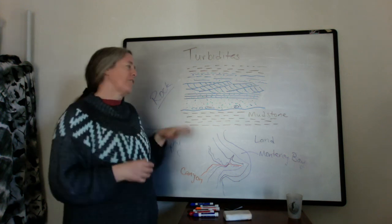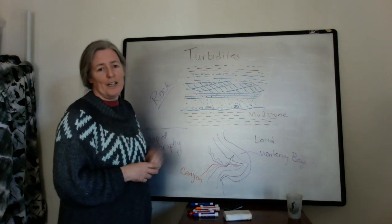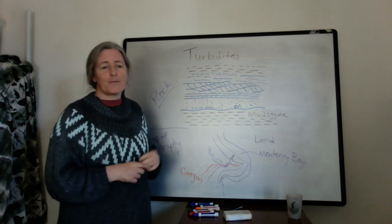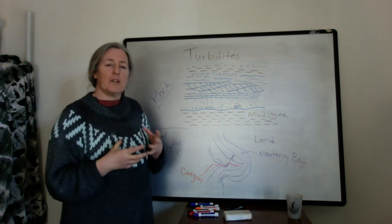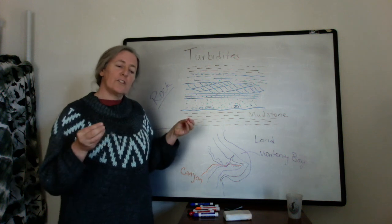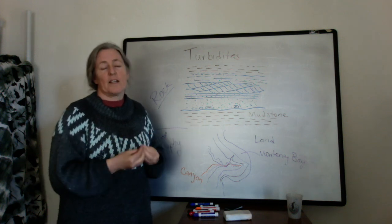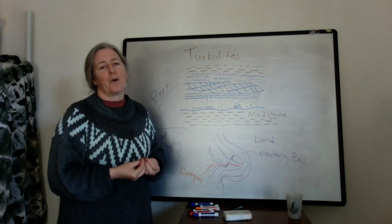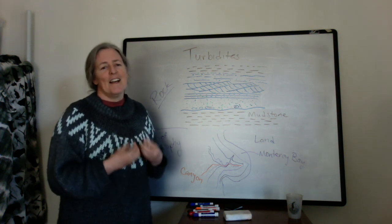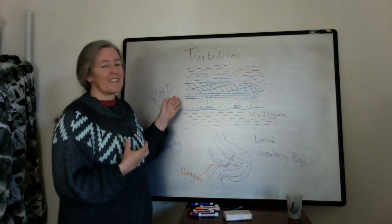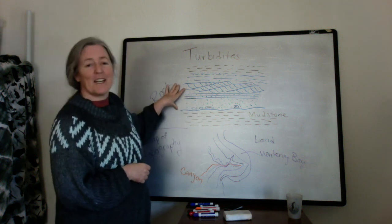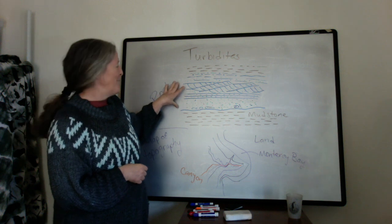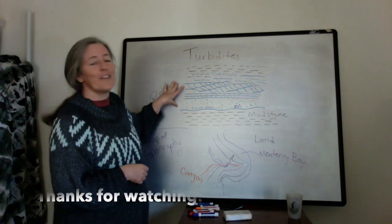If the flow keeps going fast, it will keep transporting the grains. This is a really nice example of how different types of science and observations can feed into discovering a new process. In this particular case, it fits really well with the turbidites that we can see in the rock record.